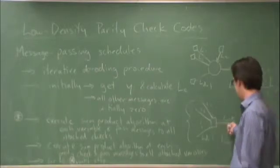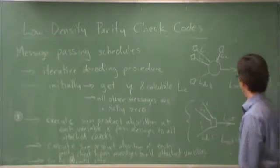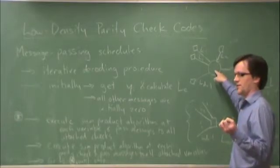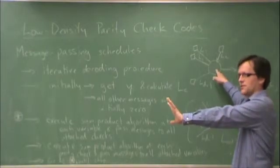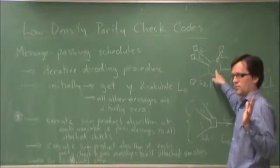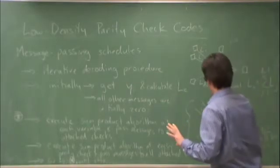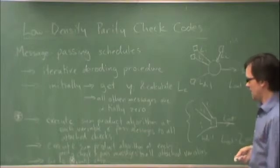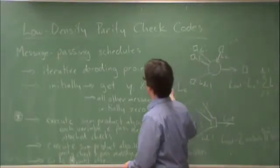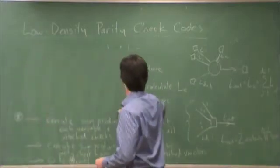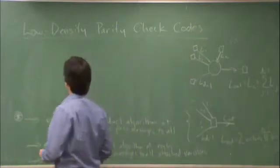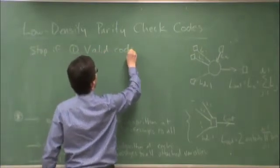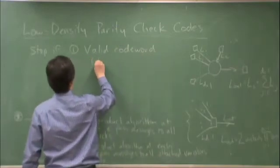So we can just look at all the checks. If the checks are all satisfied, in other words, if at the variables, I have a log likelihood ratio. What I can do is I can then say the log likelihood ratio, if it's positive, that's telling me that this is zero, and if it's negative, that's telling me that this is one. So I can make decisions on all the variables, and then I can see if those decisions satisfy all the checks. If the checks are all satisfied, then I have a valid code word. So the stopping condition should be stop if we have a valid code word. And then, in other words, all checks satisfied, all parity checks satisfied.